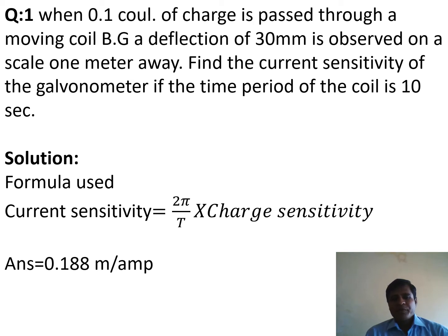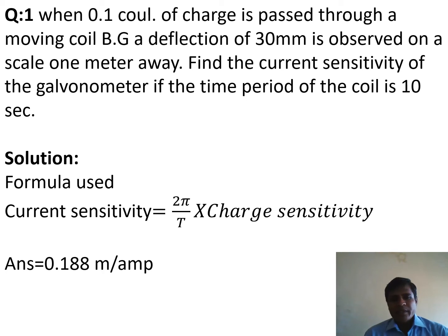Substituting into the current sensitivity formula — that is 2π / T multiplied by the charge sensitivity — the final answer for current sensitivity is equal to 0.188 meter per ampere.